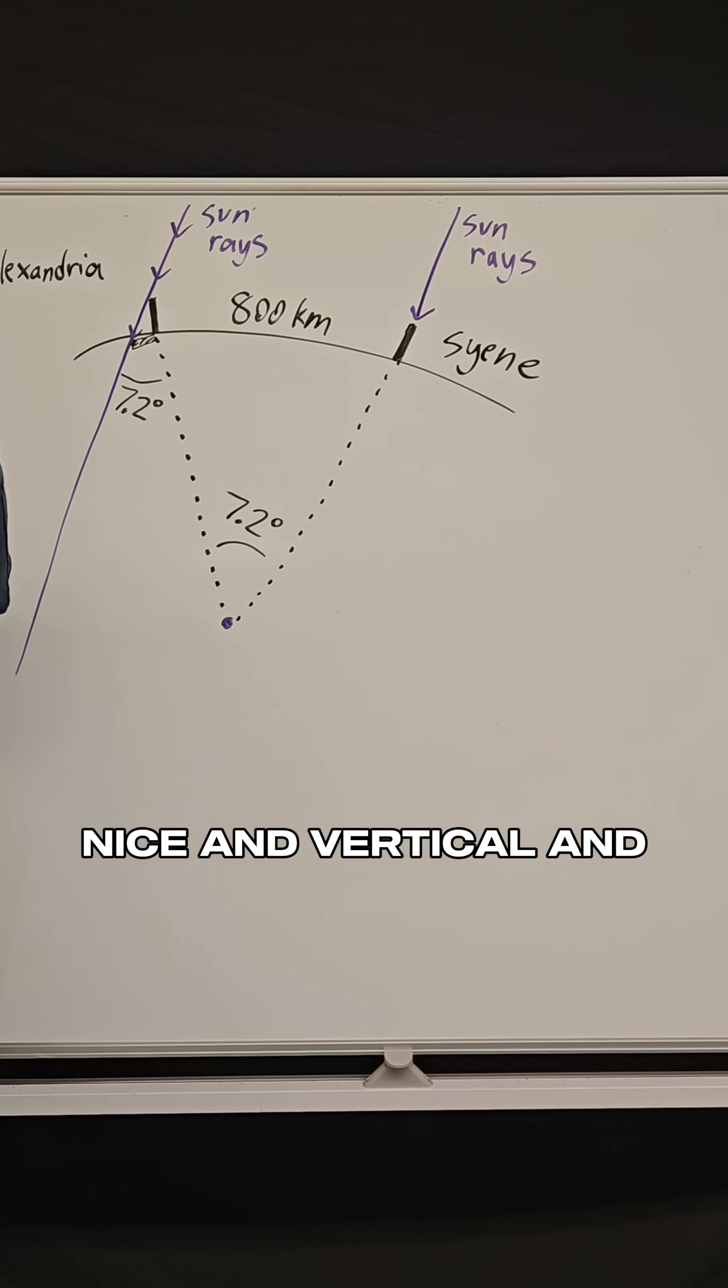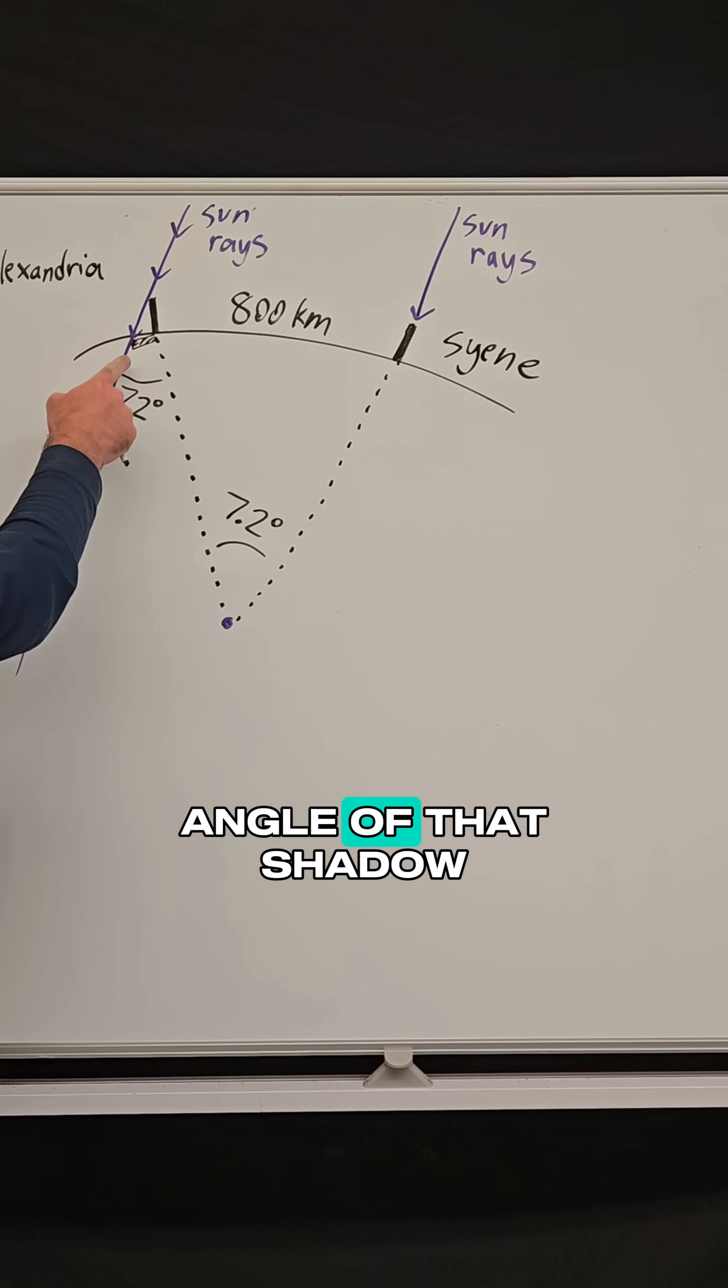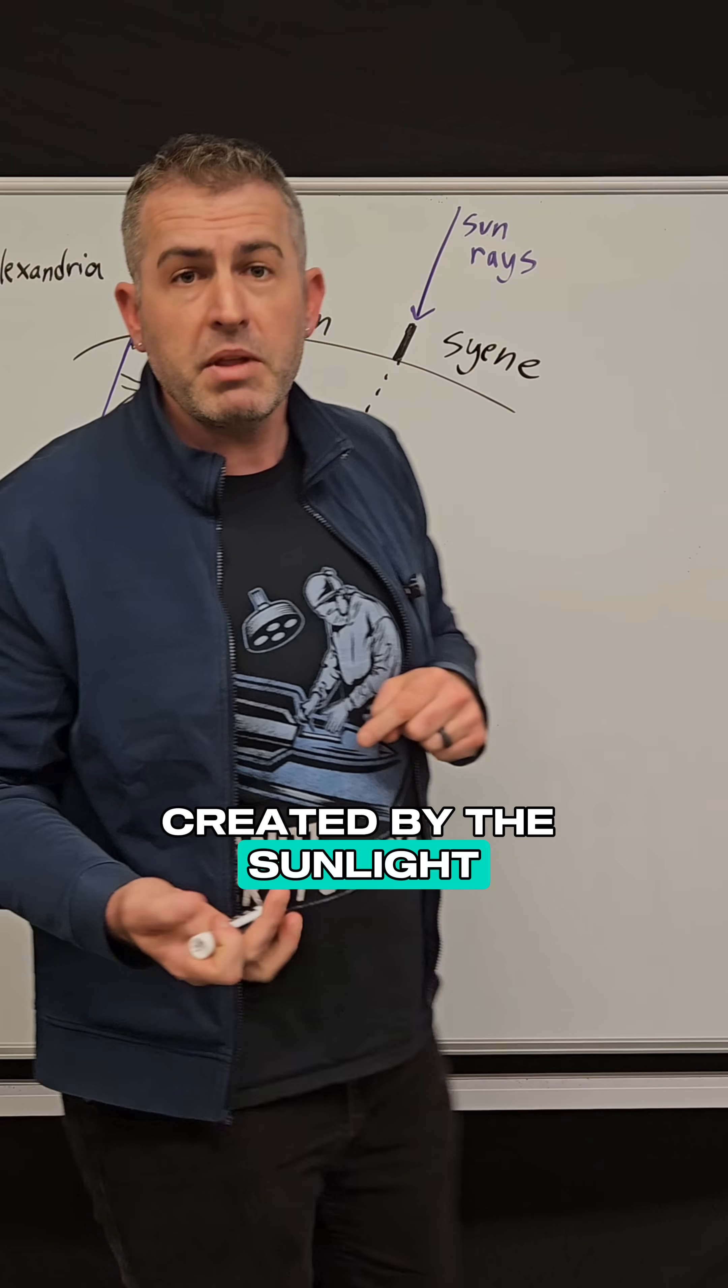And what happened was he noticed that the Sun's rays came in and they did leave a shadow. So this stick had a shadow and he measured the angle of that shadow created by the sunlight and he determined that that's exactly 7.2 degrees.